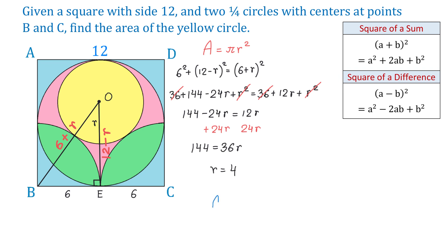Now let's find the area. Area equals pi times 4 squared. We can write the result as 16 pi, or if we want to round, that is approximately 50.3 square units. Thank you for watching and please come back for more math videos.